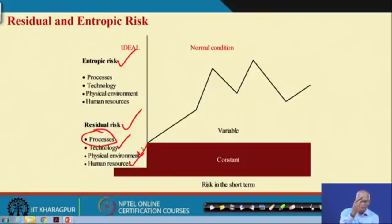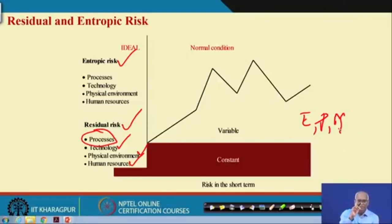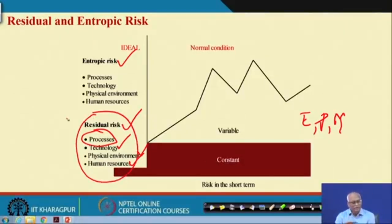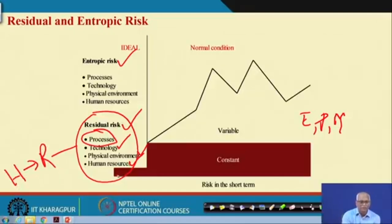Human resources must also be considered. The designer has to think about what human resources are required — what competencies are needed for running the equipment, running the processes, and doing the maintenance. While designing on the drawing board, the designer should see all these things are fulfilled. They should understand hazards in processes, technology, environment, and human resources. The total hazard and associated risk should be ALARP — as low as reasonably practicable.